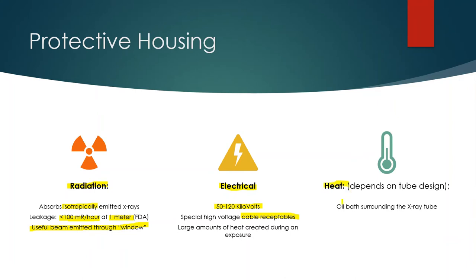Heat dissipation depends on tube design, but for the most part there is an oil bath surrounding the glass x-ray tube. Heat moves away from the x-ray tube, heats up the oil, the oil heats up the tube housing, and the tube housing heats up the air in the room — and that is how heat is dissipated.